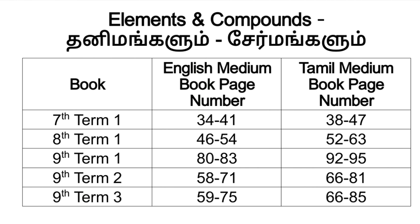Please download the new books and go through the page numbers. First, the 7th standard Term 1. In the English Medium book, the page number is 34 to 41. In the Tamil Medium book, the page number is 38 to 47. The next topic is Elements and Compounds.